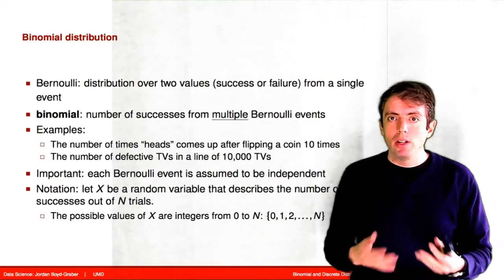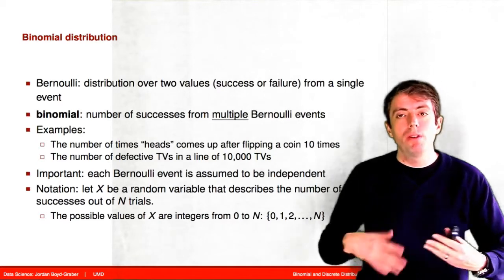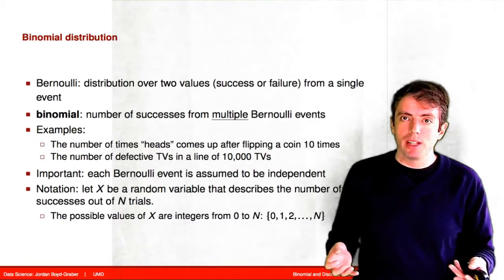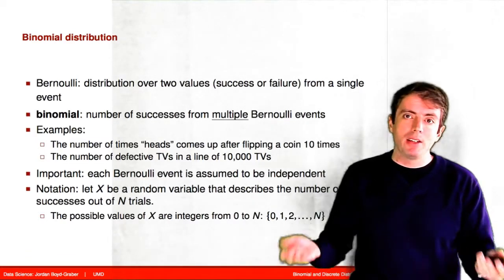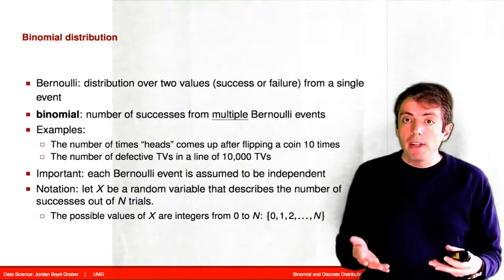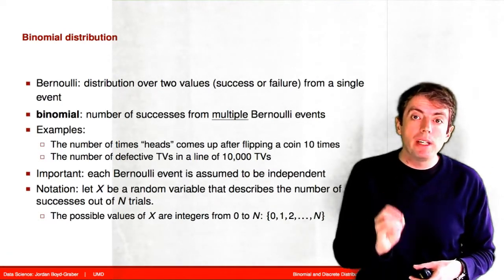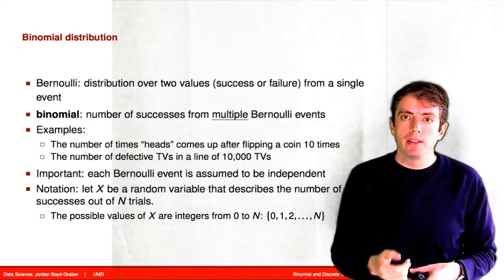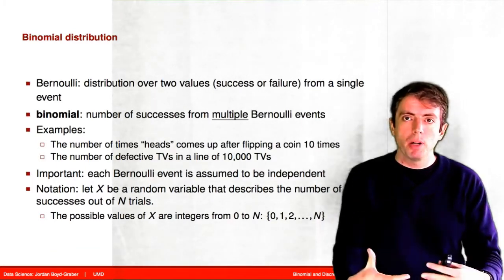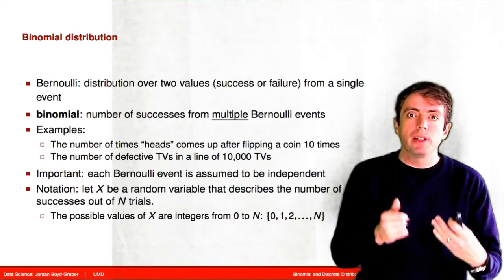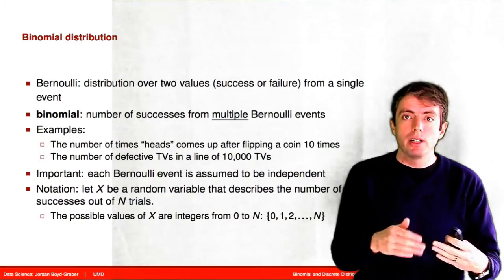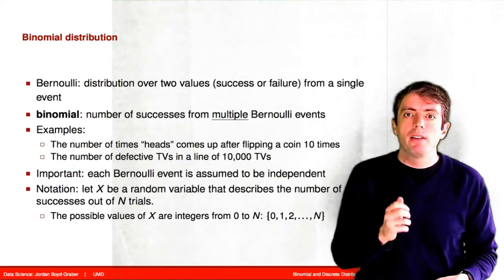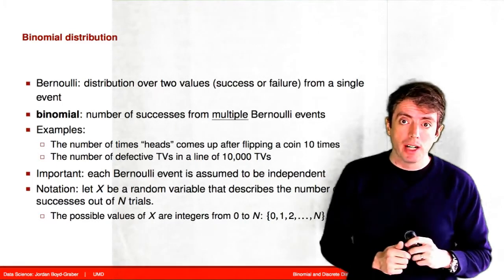The binomial distribution tells you: if you flip a coin so many number of times, what is the probability that you will get seven heads and two tails? One thing that's really important about the binomial distribution is that we assume the trials are independent — it's the same coin that you're flipping. The probability of producing a successful outcome is going to be the same at every trial, and the outcome from trial one doesn't affect the outcome of trial two.